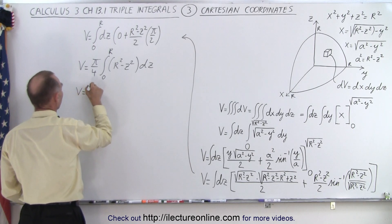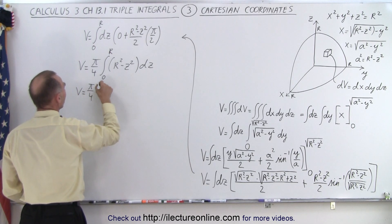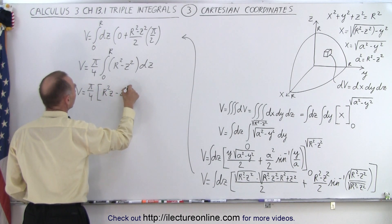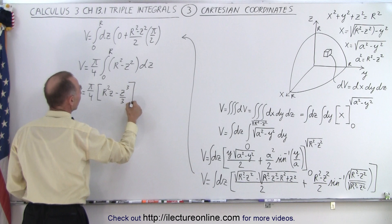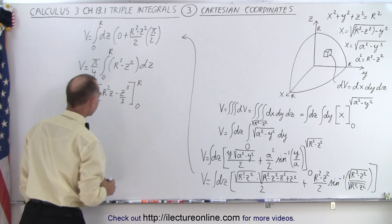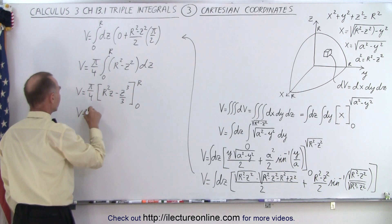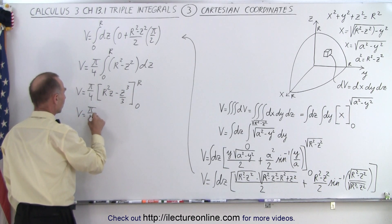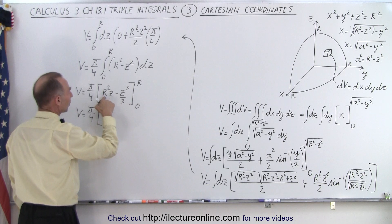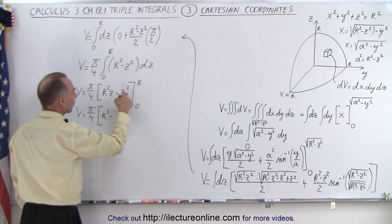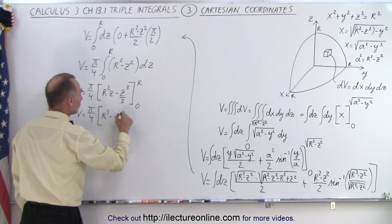So v is equal to π/4 times r²z - z³/3 evaluated from 0 to r. Plugging in the lower limit, we get nothing. Plugging in the upper limit, we get v is equal to π/4 times r² times r gives me r³ minus z³ becomes r³/3, like this.